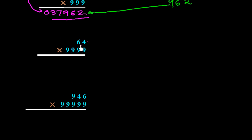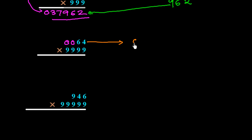Next example: 64 multiplied by 9999. Here 64 has only two digits while 9999 has four digits, so the difference is two. We need to add two zeros before 64, making it 0064.